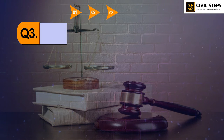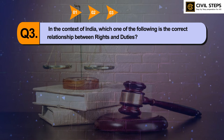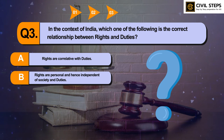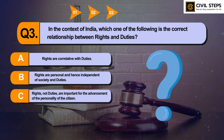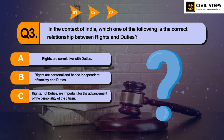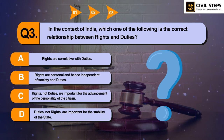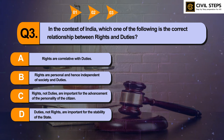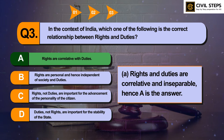Question number three: in the context of India, which one of the following is the correct relationship between rights and duties? Option A: Rights are correlative with duties. Option B: Rights are personal and hence independent of society and duties. Option C: Rights, not duties, are important for the advancement of the personality of the citizen. Option D: Duties, not rights, are important for the stability of the state. The answer is Option A — rights and duties are correlative and inseparable.